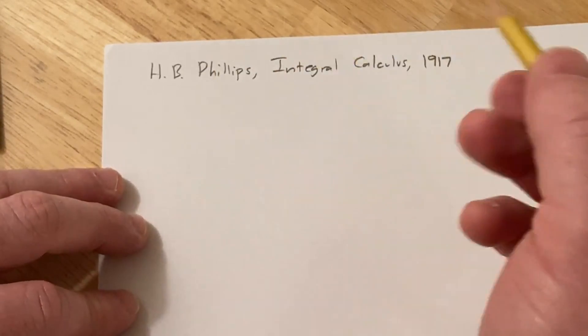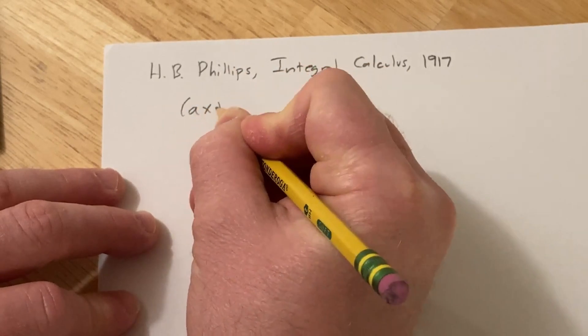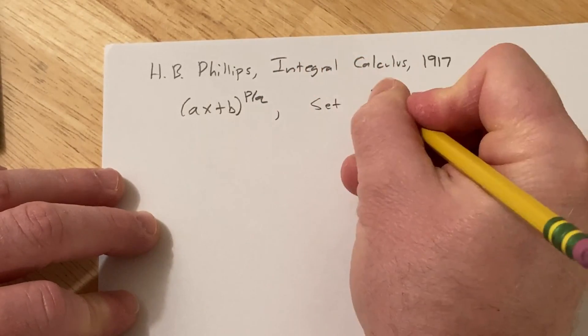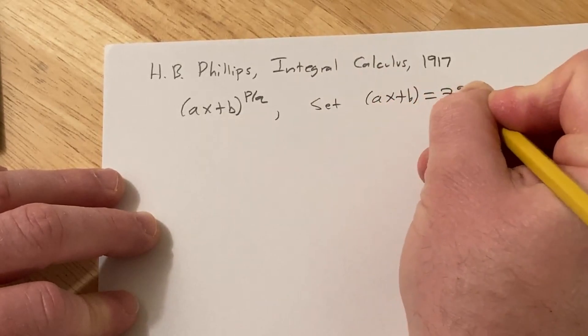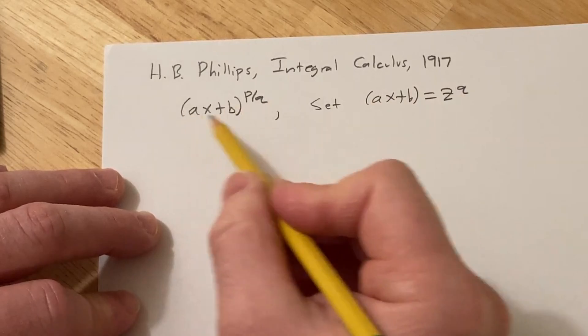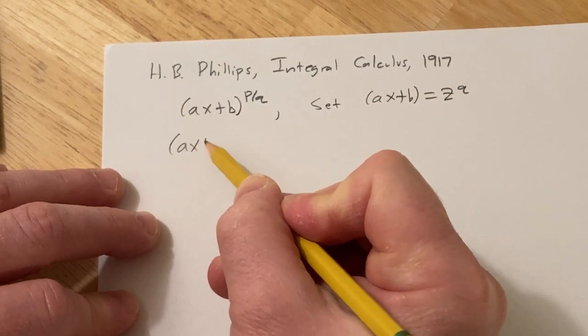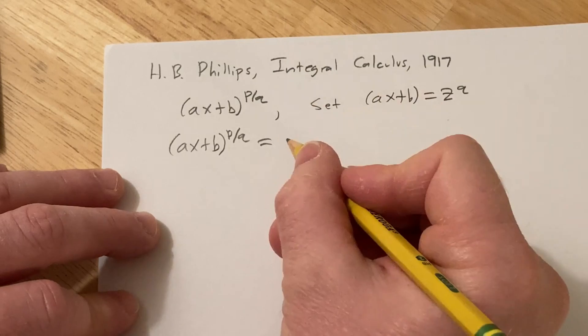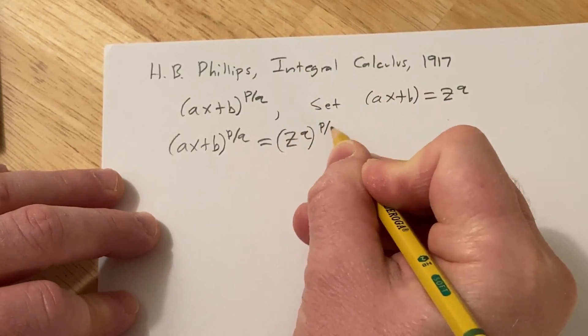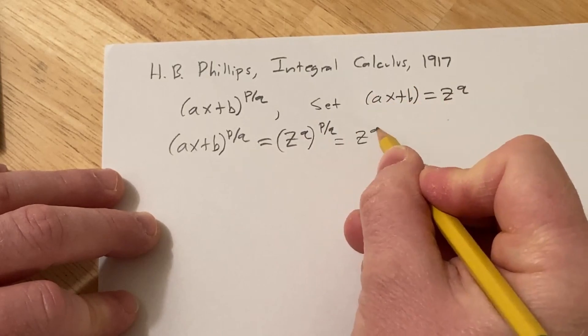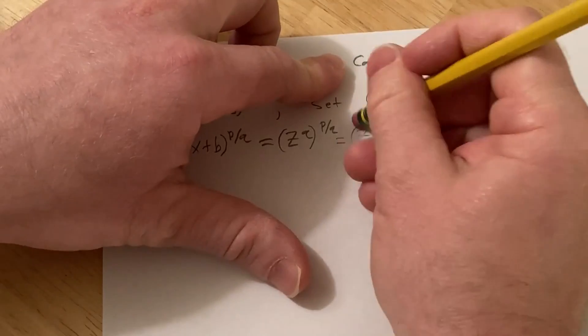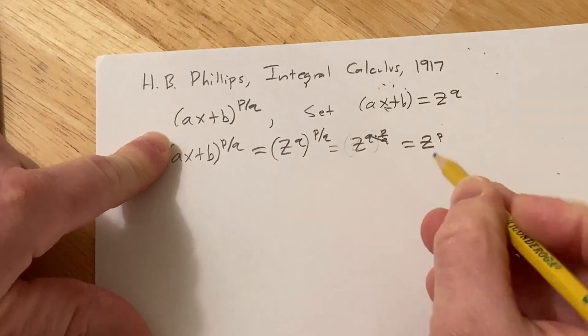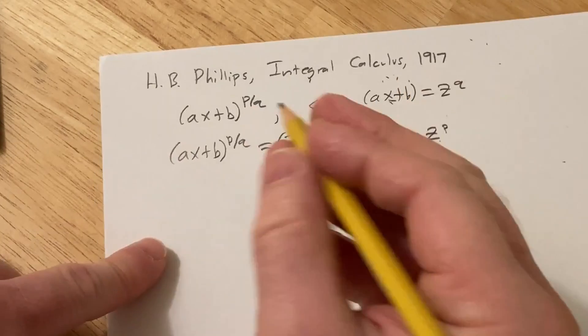The technique in the book says that when you have an integral that has the form (ax+b)^(p/q), what you can do is simply set ax+b equal to z^q. What that does is it clears everything up. If you have (ax+b)^(p/q), using the substitution, we replace ax+b with z^q. So this is z^q to the p/q, which equals z^p, much easier than this rational exponent.